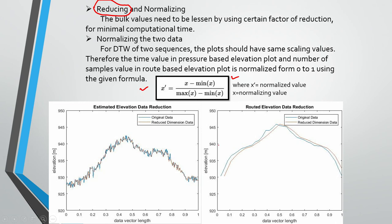On the x-axis is data vector length and on the y-axis is elevation. For the ground truth — the route-based elevation — both the original data and reduced-dimension data are shown. The original data has far more points and is sharper compared to the reduced-dimension data, but we can accept that because we are capturing the key important features.